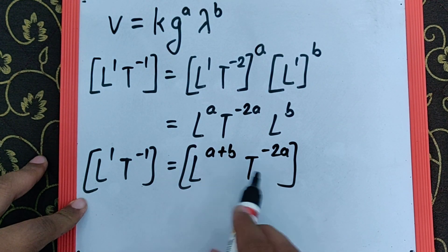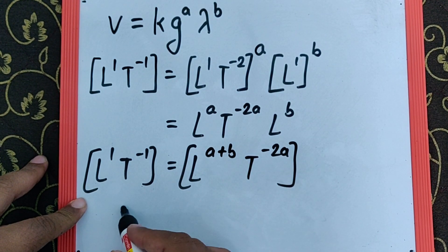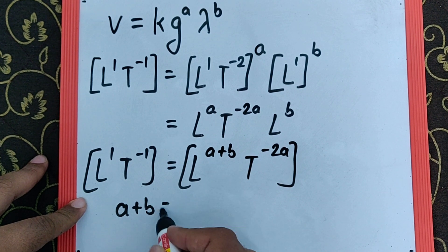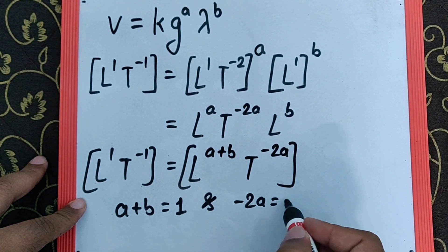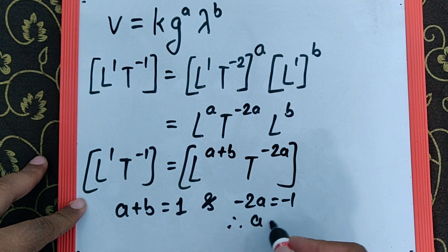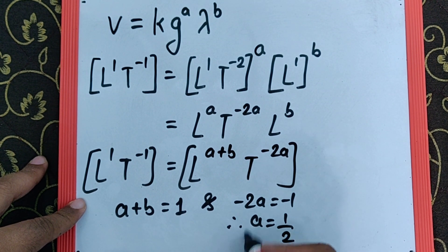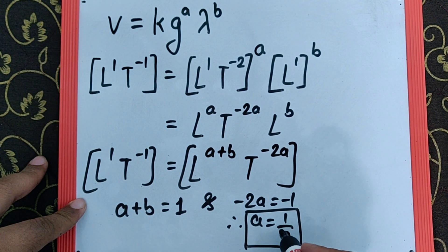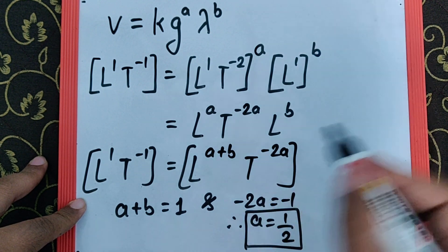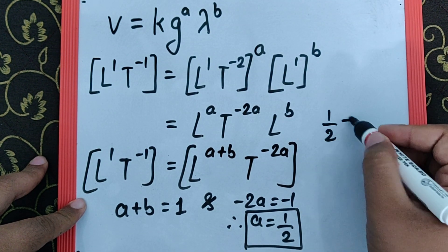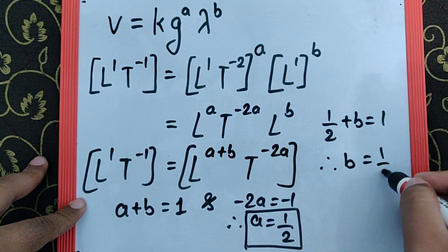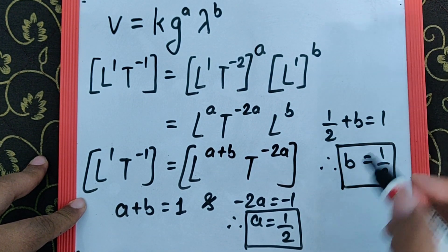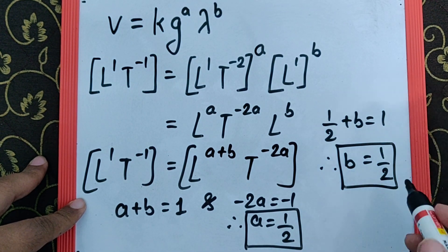Since the base is the same, the power has to be the same, which means A plus B equals 1, and minus 2A equals minus 1, making A equal to half. Substituting A as half in this equation, we get half plus B equals 1, meaning B equals 1 minus half, which is also half. So the value of A and B is half each.